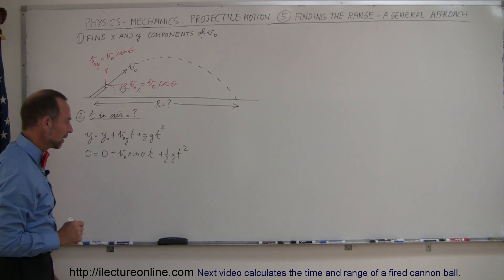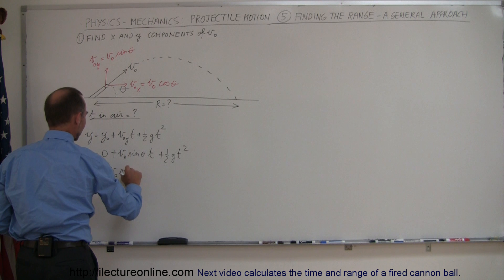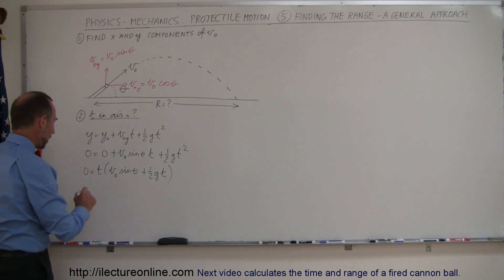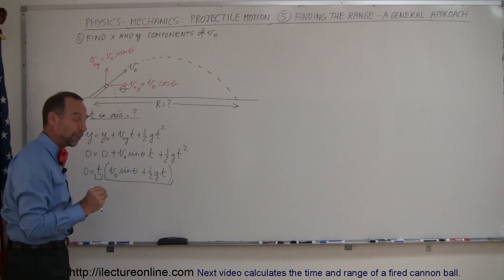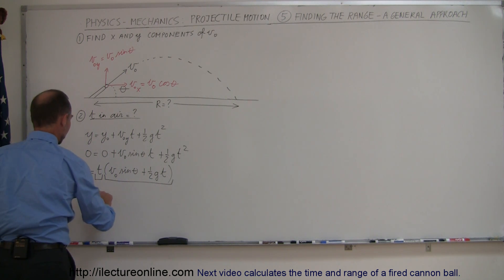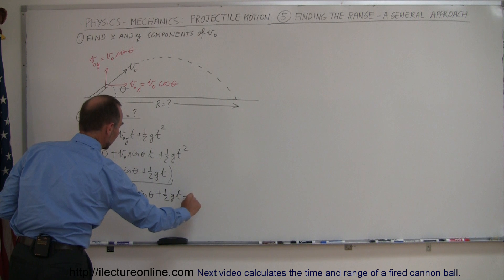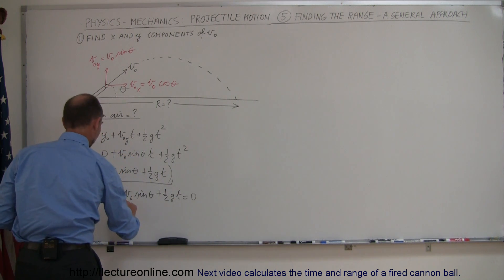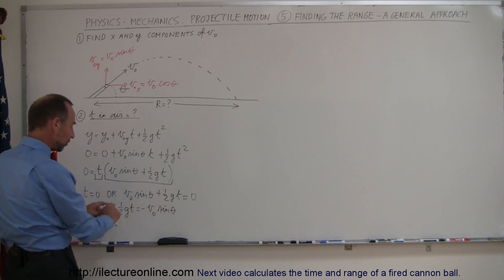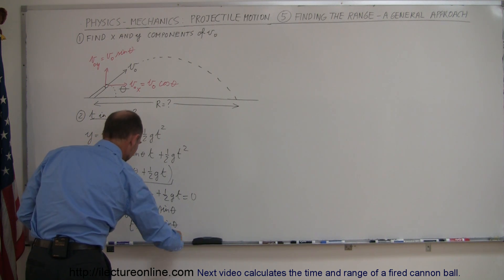Now we have to solve this equation for time. We can factor out a t, so we have zero equals t times (v-initial times the sine of theta plus one-half g t). Whenever we have a product of two things equal to zero, one or the other must equal zero. That means t equals zero, or v-initial sine of theta plus one-half g t equals zero. Moving terms across: one-half g t equals negative v-initial times the sine of theta. Multiplying both sides by two and dividing by g gives t equals negative 2 v-initial sine of theta divided by g.